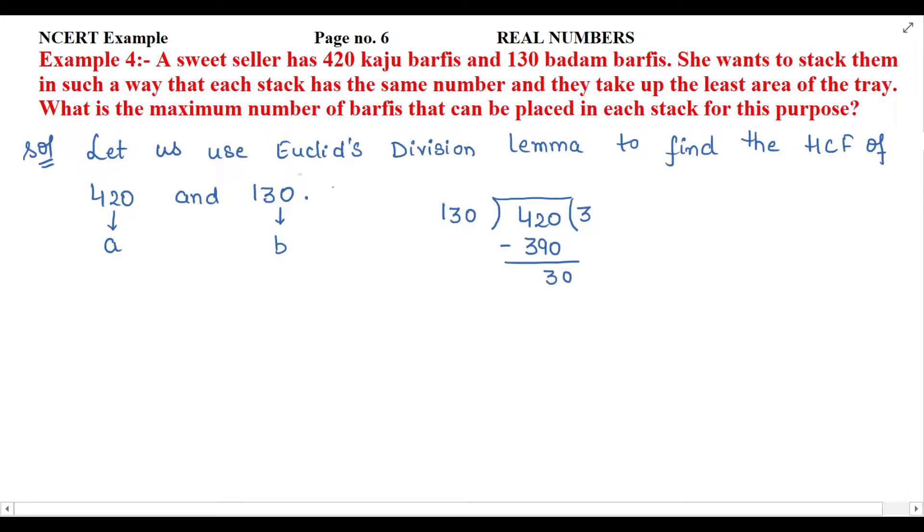Now if we talk in Euclid's division lemma format, we can write 420 in the form a = bq + r. a is 420, b is the divisor which is 130, q is the quotient which is 3, plus remainder which is 30.